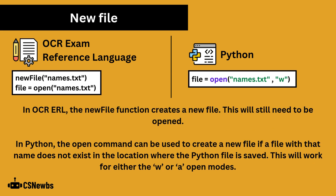In OCR pseudocode, the new file function creates a new file, which will still need to be opened. In Python, the open command can be used to create a new file if a file with that name does not exist in the location where the Python file is saved. This will work for either the W or A open modes.